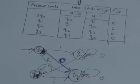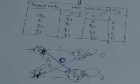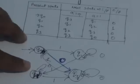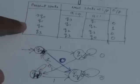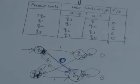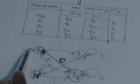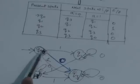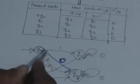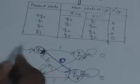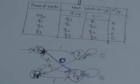This is the graphical representation of this Moore machine. We must also put an arrow before the initial state. Since q0 is the initial state, an arrow has been put before this state to indicate that q0 is the initial state of this Moore machine.